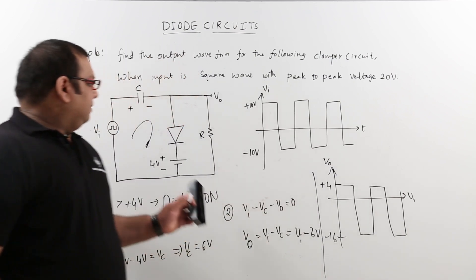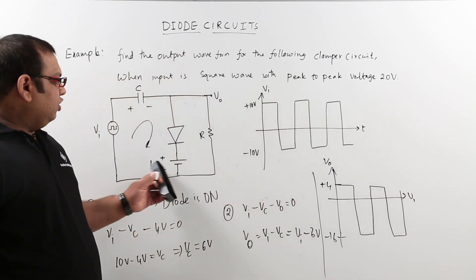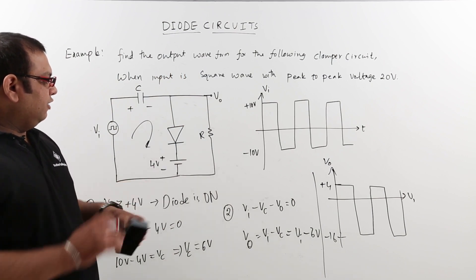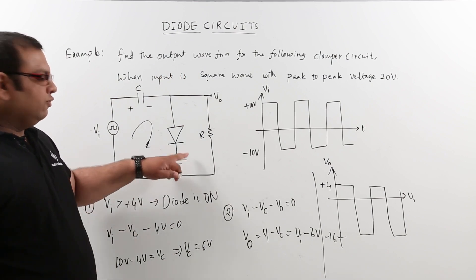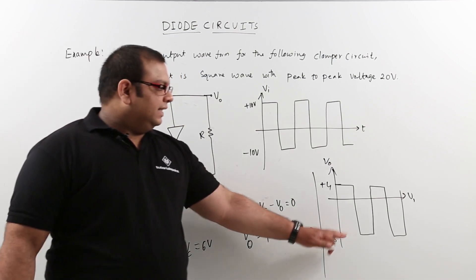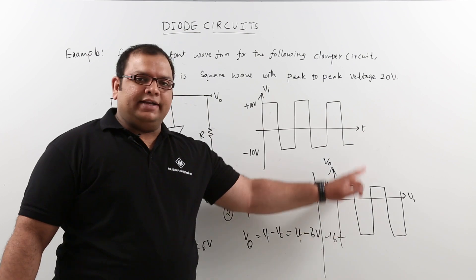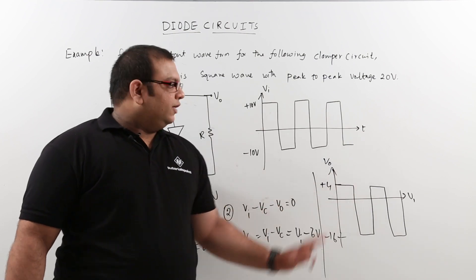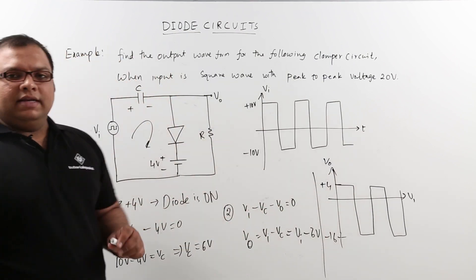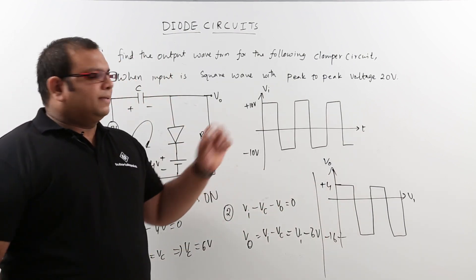By changing the value of this voltage source, we can change the level shift. This concludes the problem on the clamper circuit.